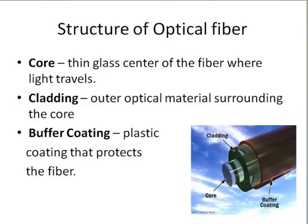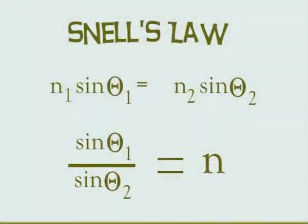This same principle is applied in optical fibers. An optical fiber consists of three parts: the core, the cladding, and the buffer coating. The core has a refractive index higher than the cladding, and the buffer coating serves as a protective layer. Snell's law — which gives the relation between the angles of incidence and refraction when light travels from one medium to another — governs this behavior.